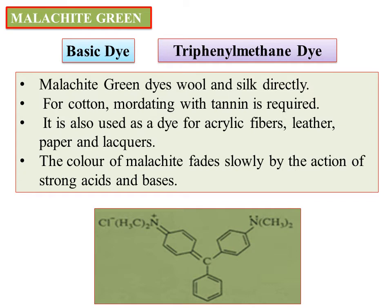The next dye is Malachite Green. This is a basic dye. It has a nitrogen group. It has a pack name: triphenylmethane. Malachite Green dyes silk and wool directly. It doesn't require a mordanting agent. It is used for acrylic fibers, leather, papers, and liquors. This is Malachite Green.